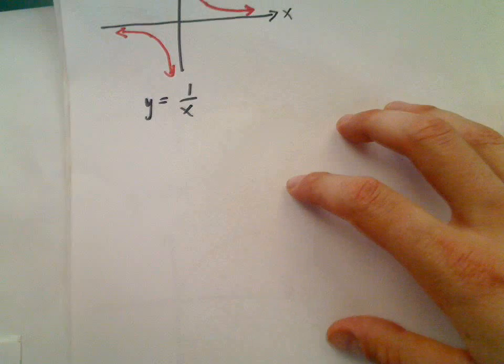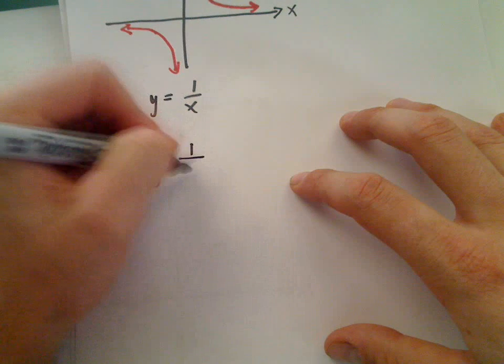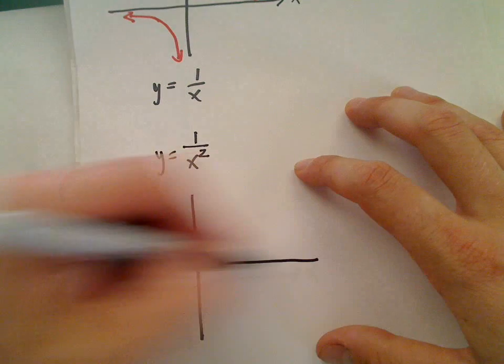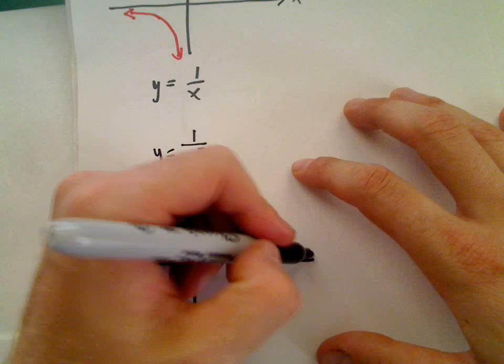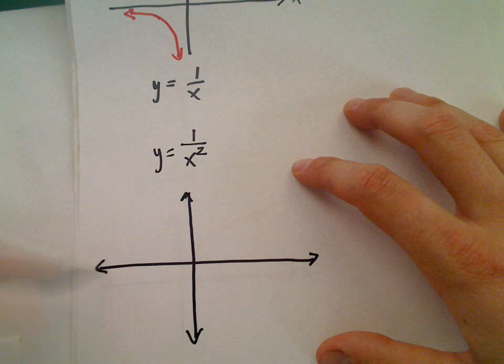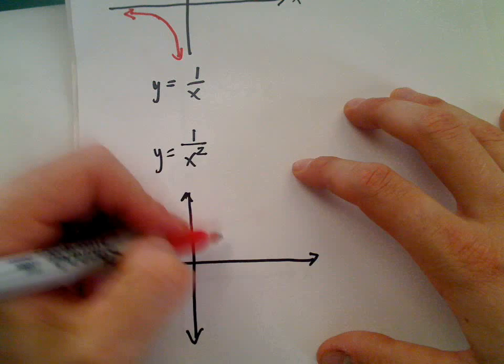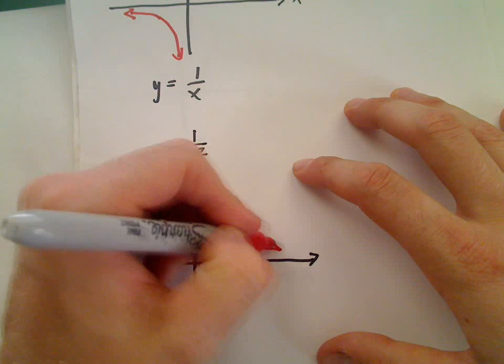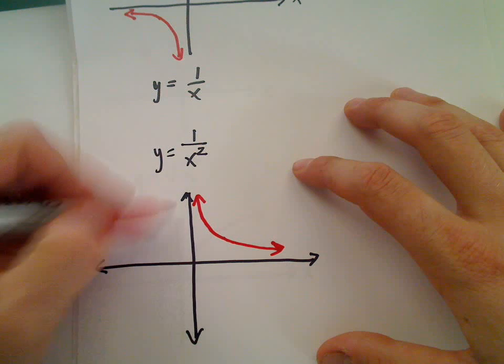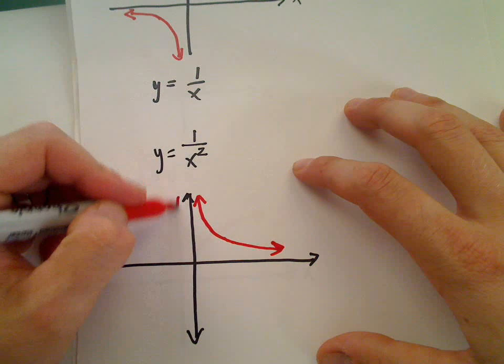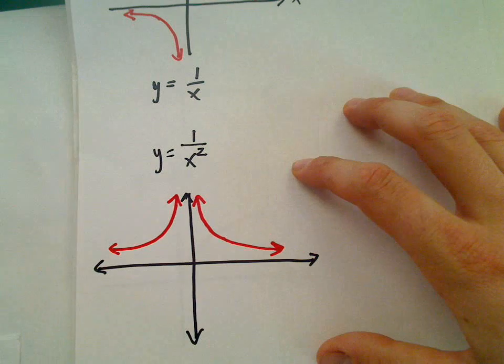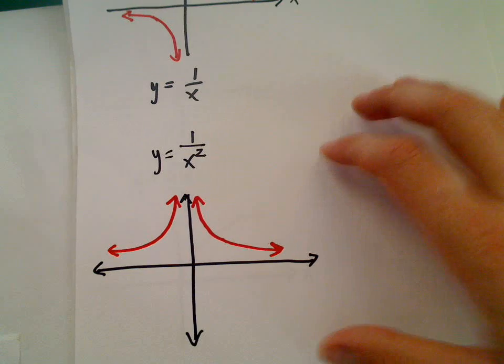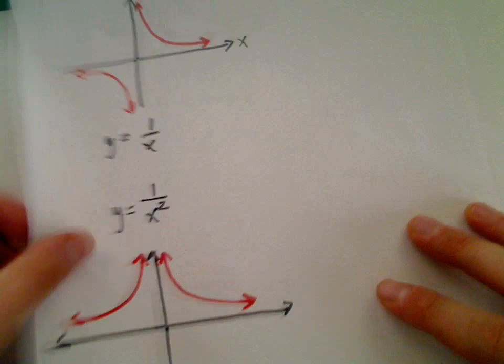And likewise, if we were to graph y equals 1 over x squared, the top right half will look very similar. It'll get close to the y-axis, and also get close to the x-axis. But then it's the exact same thing, basically, if you reflected about the y-axis. So that'll be the graph of y equals 1 over x squared. And just as a reminder of the other two here.